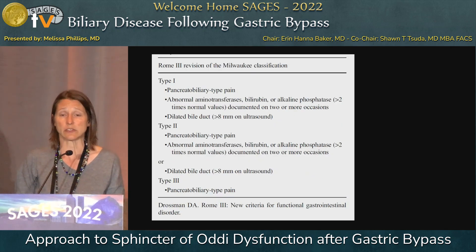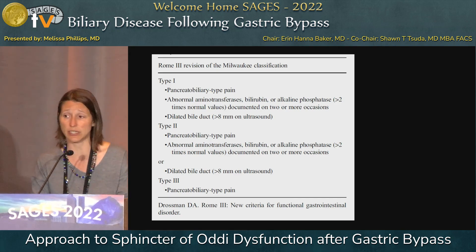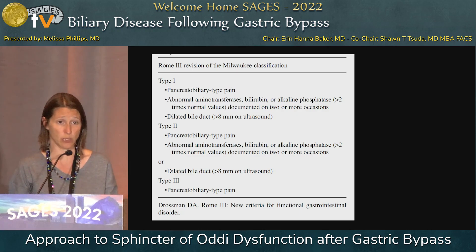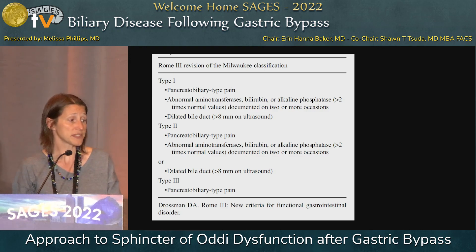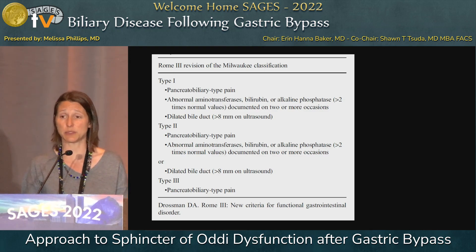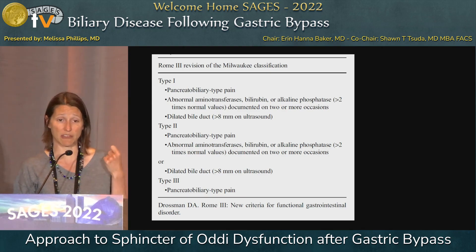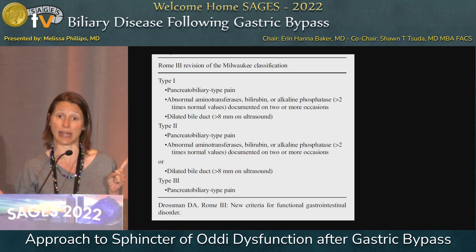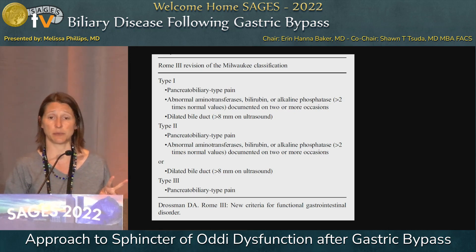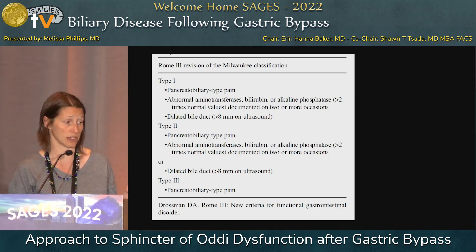When we look at the Milwaukee classification specifically for sphincter of Oddi dysfunction, they've broken it down into two categories: the biliary component and the pancreatic component. The long and short of that is there are three types. Type 1 is the type you would expect to have symptomatic improvement with intervention — they have classic symptoms of pain, classic symptoms of obstruction based on liver function tests and/or pancreatic tests, and a dilated bile duct greater than eight millimeters.